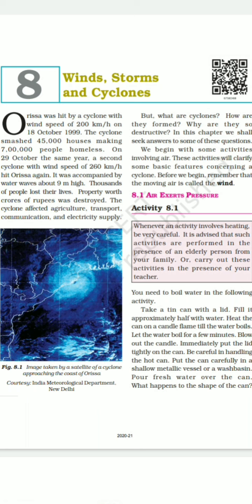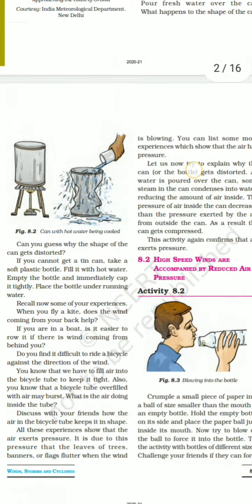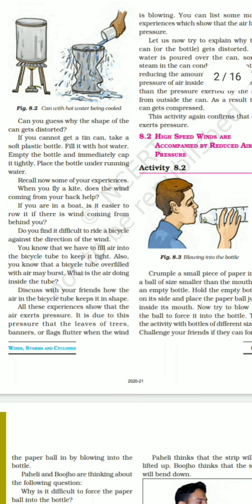Carefully handle the hot can. Put the hot can in a shallow metallic vessel or wash basin and pour fresh cold water over it. Observe what happens to the shape of the can. Can you guess why the shape of the can gets distorted?